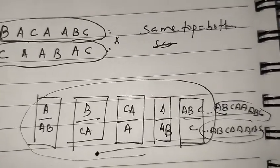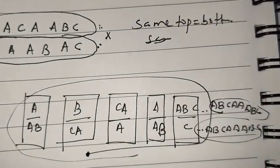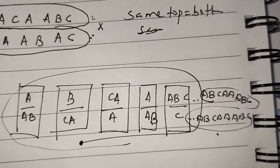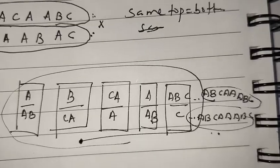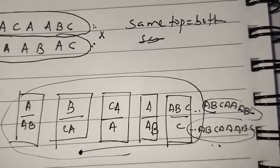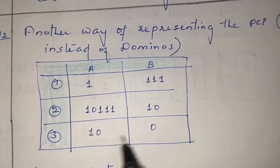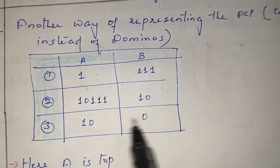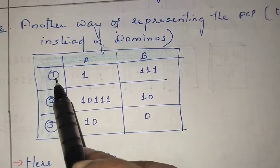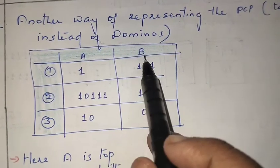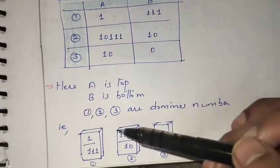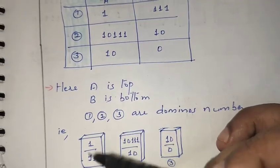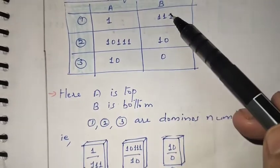We got a solution here, but PCP is undecidable — sometimes we will not get a matching pattern. We can't write a generalized algorithm for solving all such problems. Let's look at another example. Instead of a domino diagram, we can represent PCP as a table: the domino number, the top part (a), and the bottom part (b).